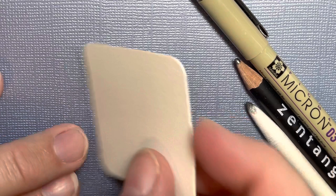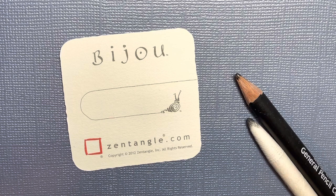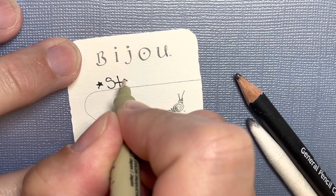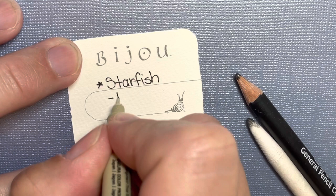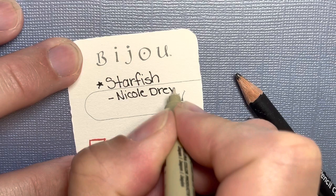Okay, to start, I'm going to flip this over, and I like to write the name of the tangle we're using on the back. So this one is called Starfish, and it was created by Nicole Dreyer.